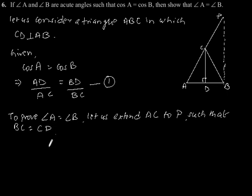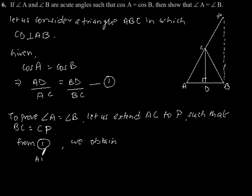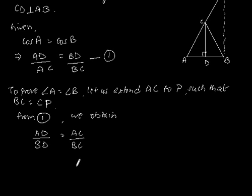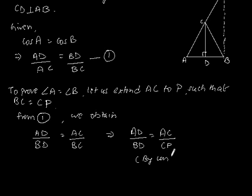From equation 1, we obtain AD by BD is equal to AC by BC, which implies AD by BD is equal to AC by CP, by using the construction.